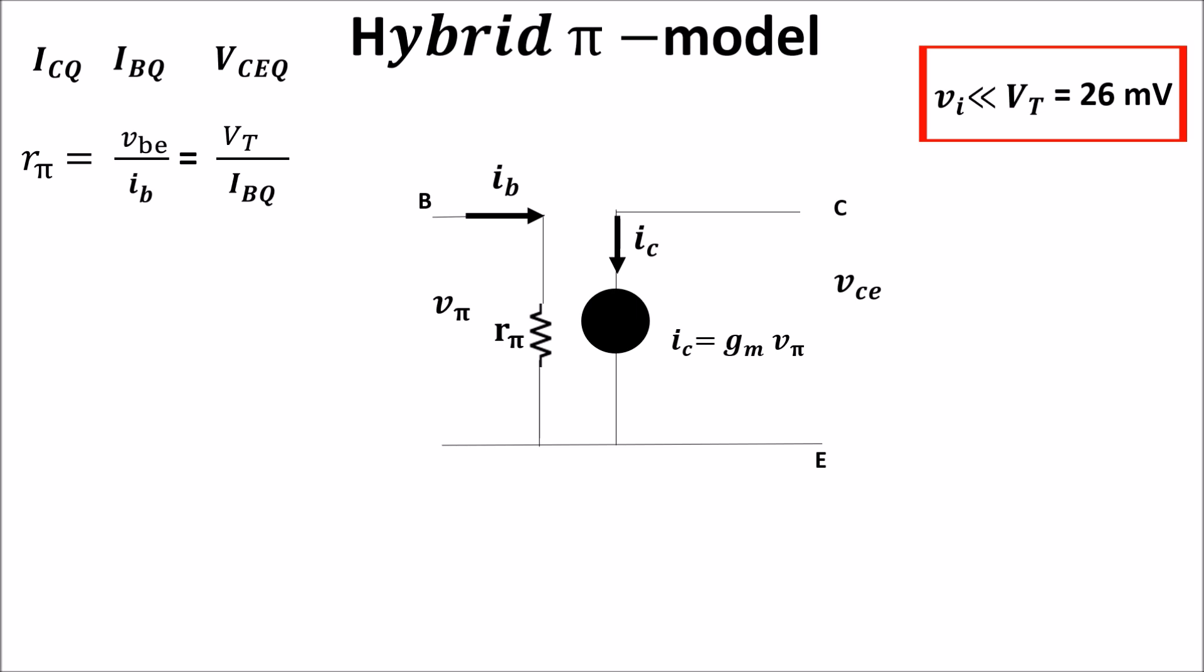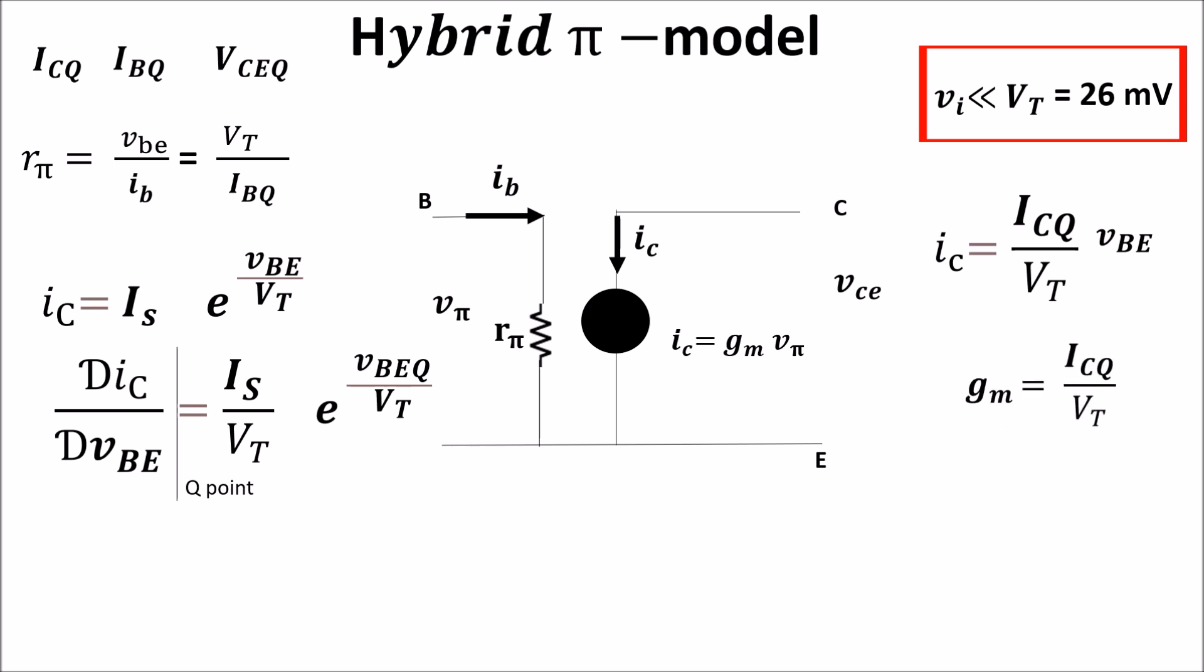We know that the relation between the total collector current and the total voltage in the base emitter junction is this. So the variation of the total current in the quiescent point is the derivation of IC with respect to VBE, and it is this one, from which we can see that the transconductance GM is the collector current in the quiescent point divided by the thermal voltage.